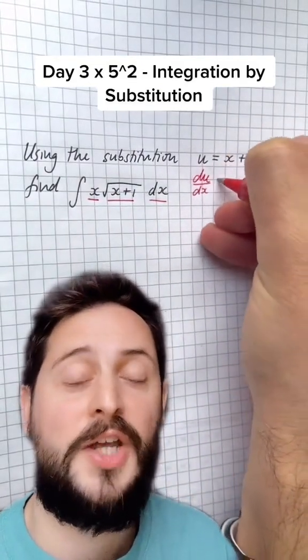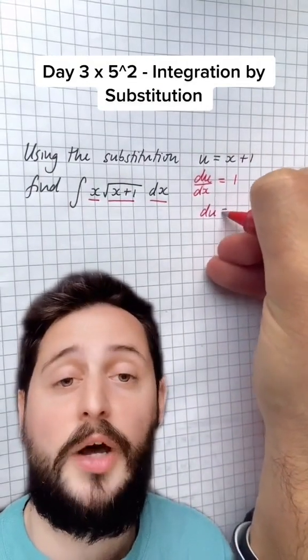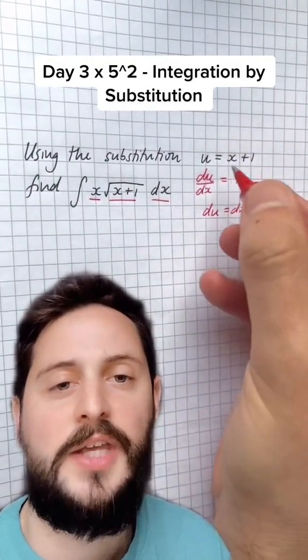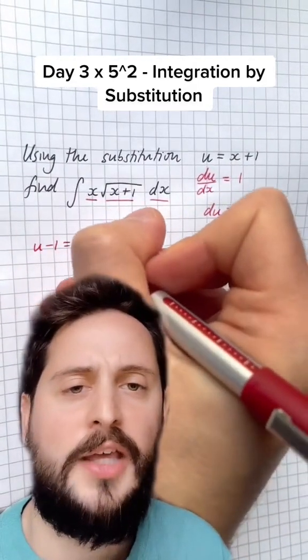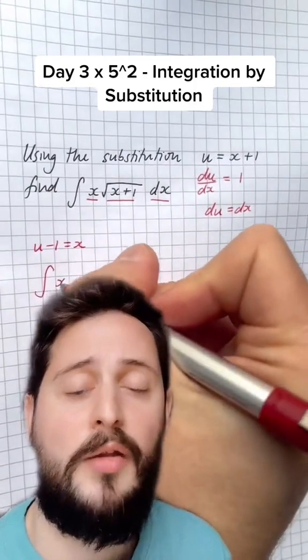I'll start off by differentiating u with respect to x so that I get du dx is equal to 1, and I'll multiply by dx so that du is actually just equal to dx in this case. And I'm also going to rearrange that u equals x plus 1 to find out that x is equal to u minus 1.